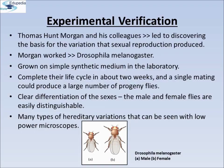Experimental verification of the chromosomal theory of inheritance was done by Thomas Hunt Morgan and his colleagues. Morgan worked with tiny fruit flies called Drosophila melanogaster, which were found very suitable for such studies. They could be grown on simple synthetic medium in the laboratory, they complete their life cycle in about 2 weeks, and in a single mating could produce a large number of progeny flies. Also, there was a clear differentiation of sexes — the male and female flies are easily distinguishable — and it has many types of hereditary variation that can be seen with a low power microscope.